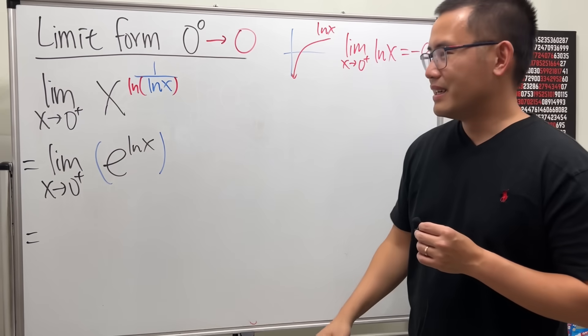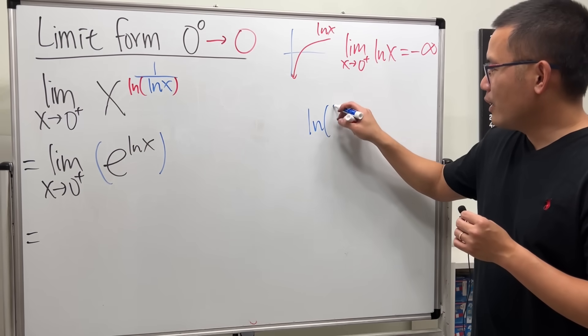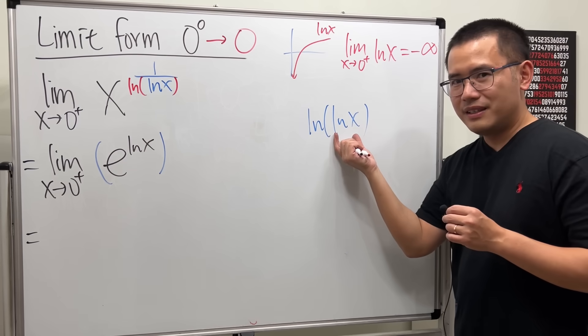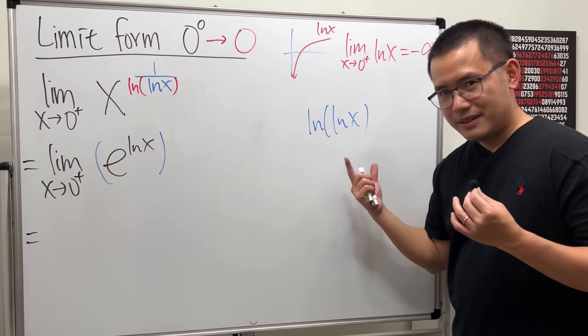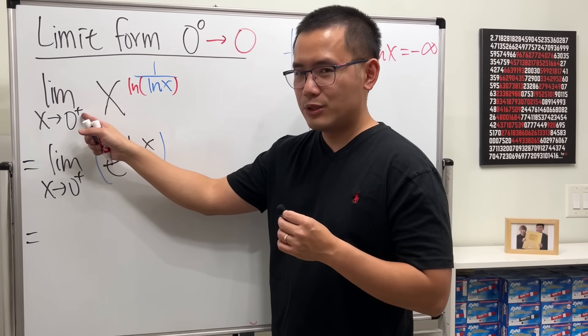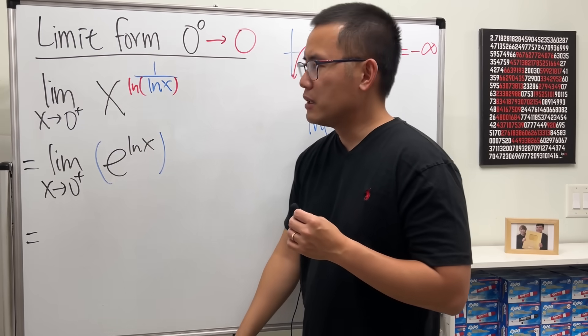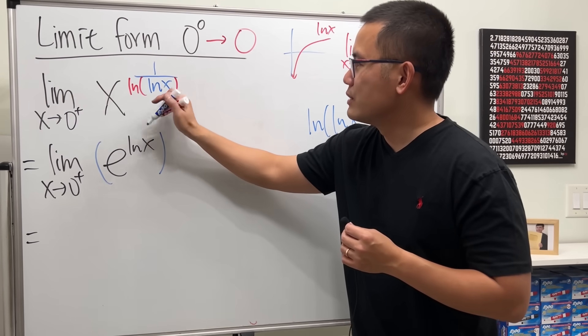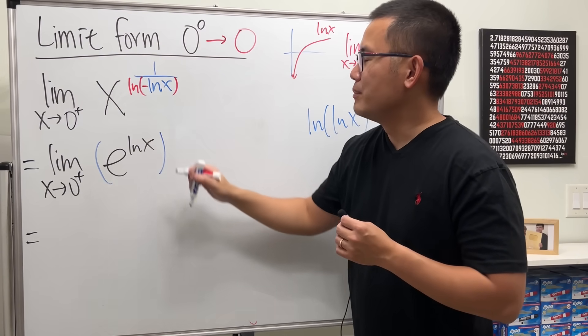Have a look. If we have ln of lnx, if x goes to infinity, the inside is infinity, ln infinity is still infinity. But here's the small part though, x is approaching zero plus because that's how I set it. So what do I do? Inside here I will have just to negate that because negative times negative will still give me the positive infinity.